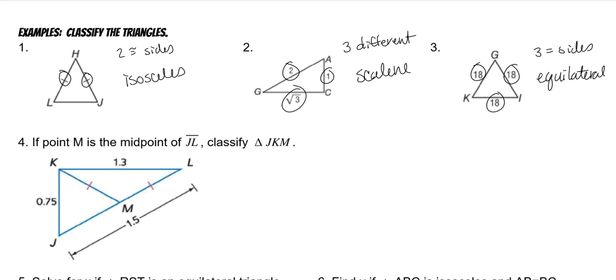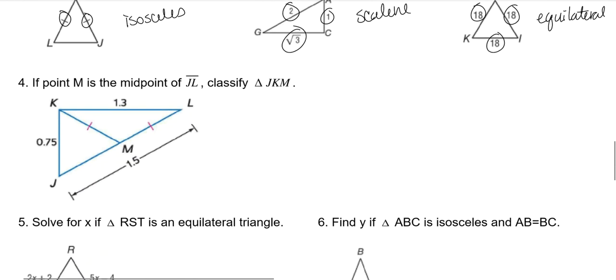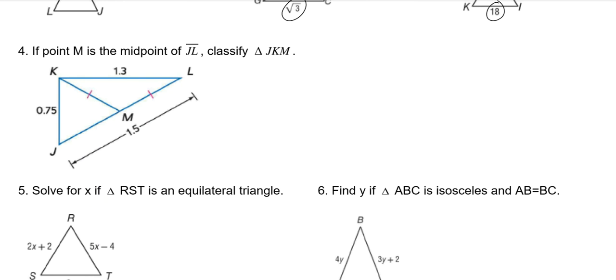So if we're talking about sides, it's an equilateral. If we're talking about angles, it's an equiangular. If M is the midpoint of JL, that means that this is also the same length. Then classify JKM.